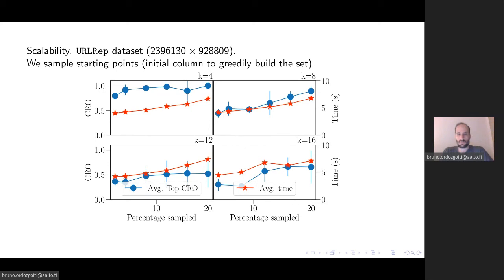Or at least if you start from one of those columns, you should be able to find a similar subset. So sampling a subset of the columns of the matrix should be enough to get good results. And here we show that indeed by sampling about 15 or 20% in some cases, this seems to be enough to achieve good results.